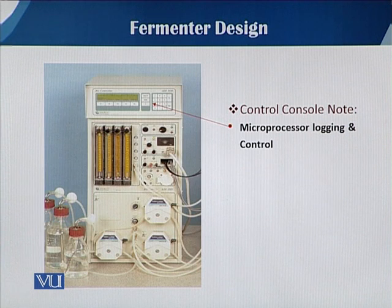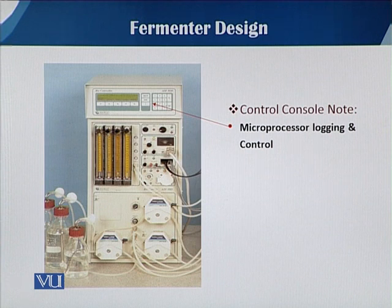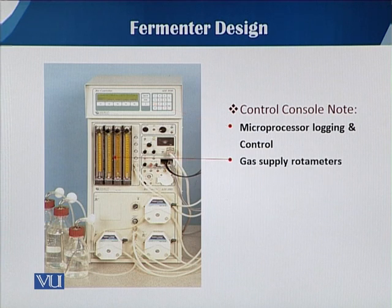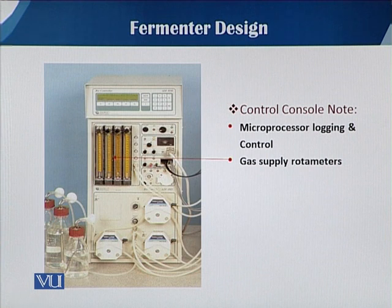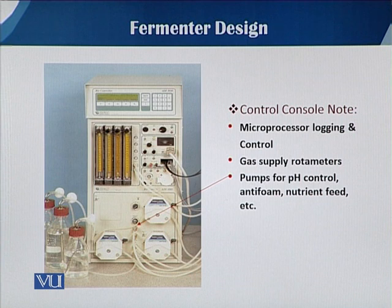If we see the detail about the dialysis unit, it has different microprocessors in which we can do some programming. As concerned with fermenter control, monitoring, and recording, a mini computer — a specialized computer — is attached to run the whole fermentation. That is the microprocessor logging and control system. There are also gas supply rotameters, because when we supply gas to the fermentation process we need to know the pressure and volume of gas fed to the fermentation medium, and then pumps for pH control, anti-foam, nutrient feed, etc.